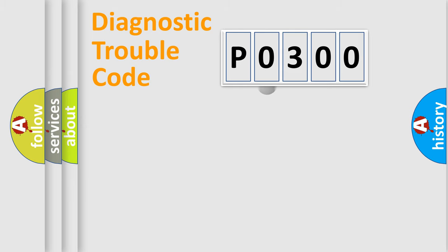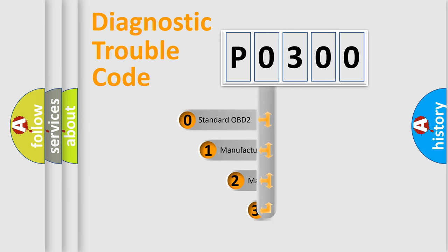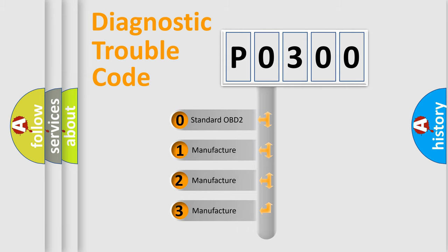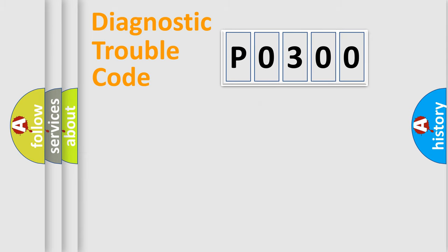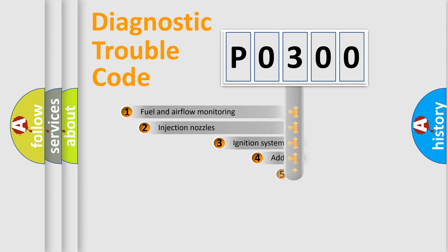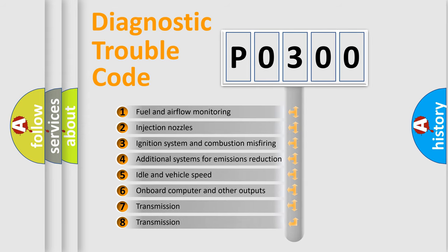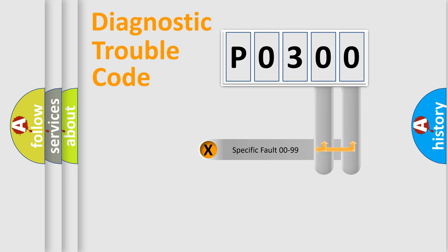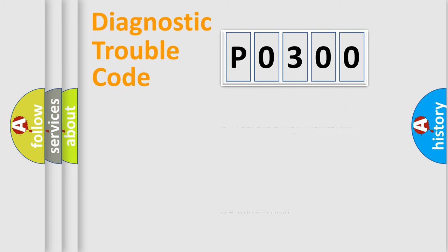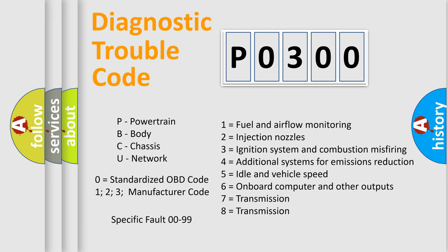This distribution is defined in the first character of the code. If the second character is expressed as zero, it is a standardized error. In the case of numbers 1, 2, or 3, it is a manufacturer-specific error. The third character specifies a subset of errors. The distribution shown is valid only for the standardized DTC code, and only the last two characters define the specific fault of the group. This division is valid only if the second character is expressed by the number zero.